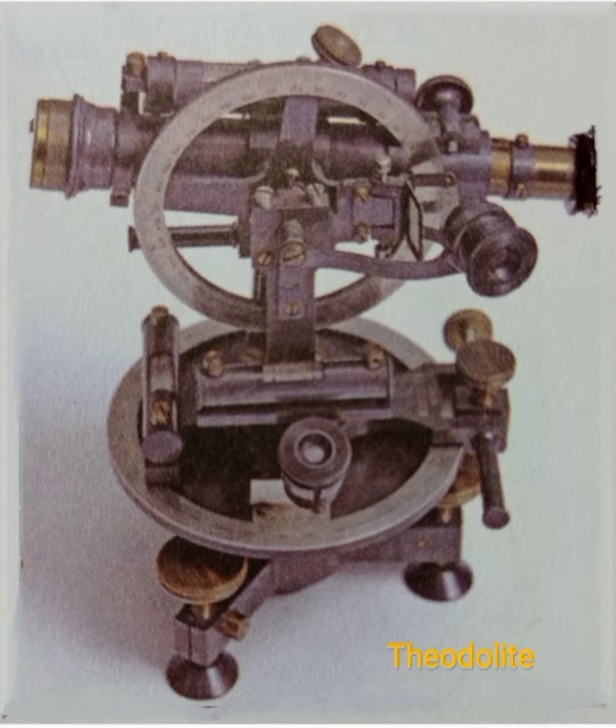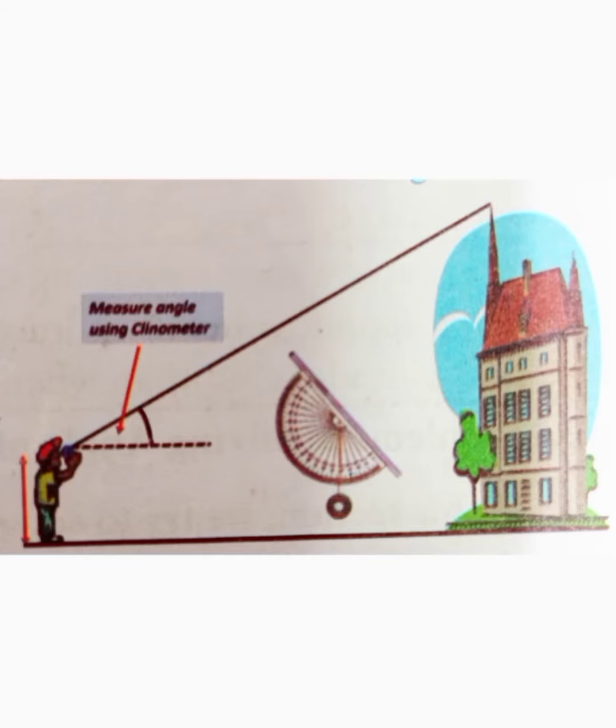In the description box, I have given you a link where they have wonderfully explained the three-dimensional view of a theodolite. Please have a glance at it. The most commonly used device to find the angle of elevation and angle of depression is the clinometer.